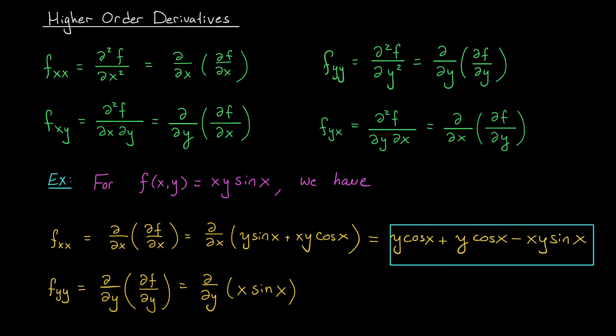For y, it's even easier. If we want to find fyy, we have to differentiate our first derivative with respect to y one more time with respect to y. But there are no y's here. So this second order partial derivative is simply zero.